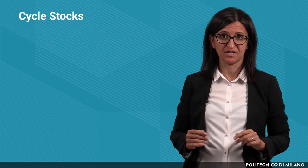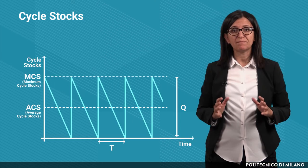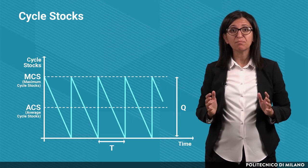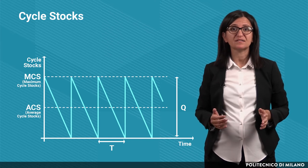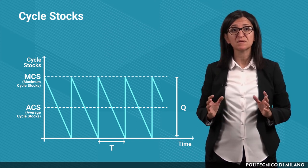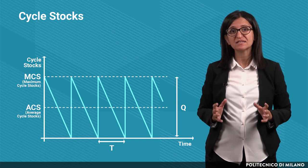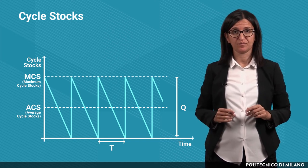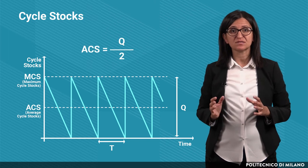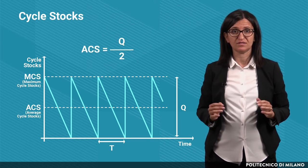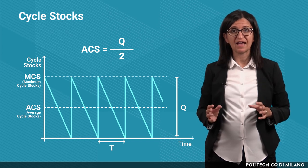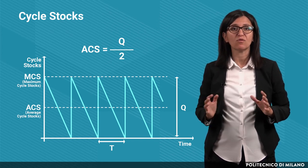Cycle stocks are a lever of efficiency, and they result from different operative rhythms of two consecutive stages in the supply chain. Therefore, their sizing is a trade-off between logistics costs. In the picture, we can see the expected path of the cycle stocks in a warehouse, under the assumption of constant customer demand and a replenishment policy with fixed order quantities equal to Q. The average cycle stocks are therefore equal to half the order quantity. Of course, the order quantity and the time interval between two orders are related.